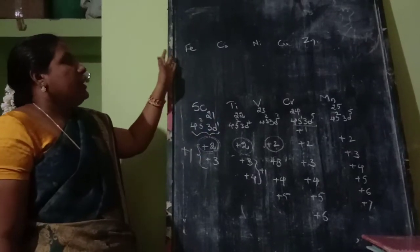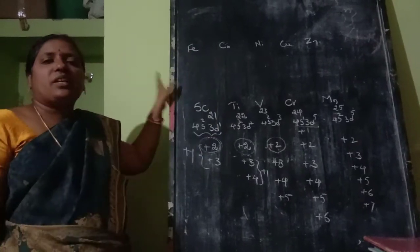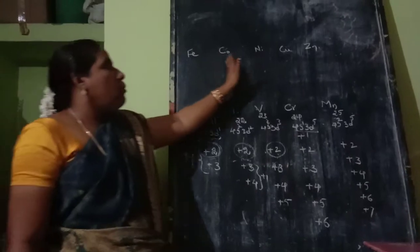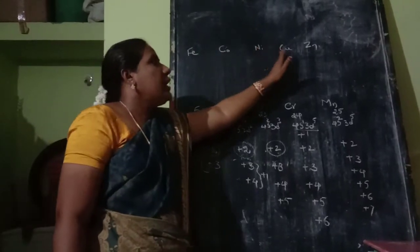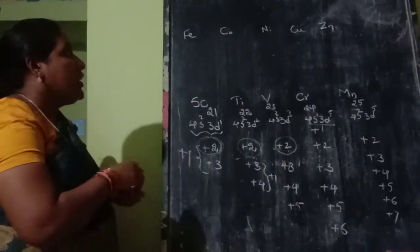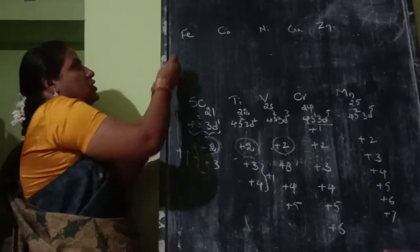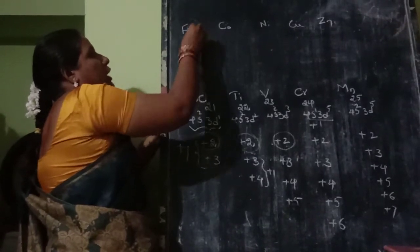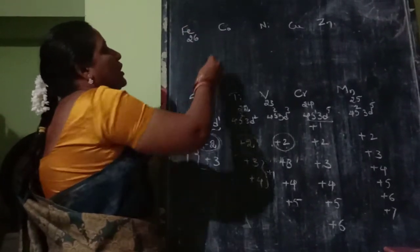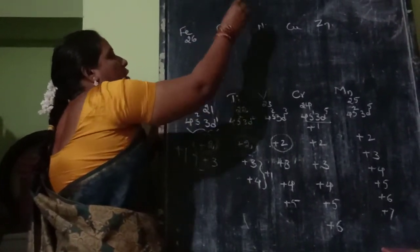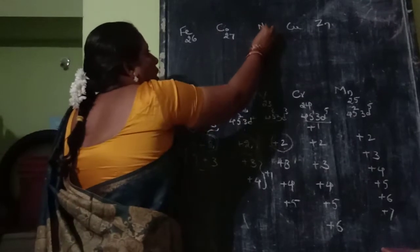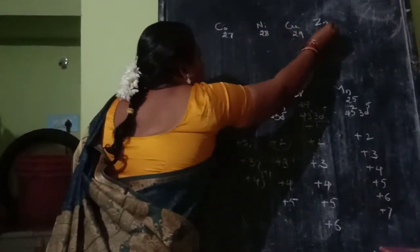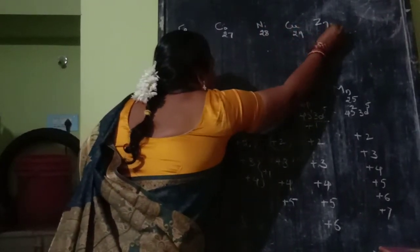From manganese, the next 5 elements are iron, cobalt, nickel, copper, and zinc. With their atomic numbers: iron is 26, cobalt is 27, nickel is 28, copper is 29, and zinc is 30.